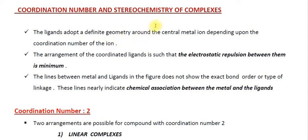Let us discuss the stereochemistry of coordination complexes, also called the coordination number and the stereochemistry of complexes. We already know what a coordination complex and coordination number is. The coordination number is the number of ligands attached to the central metal ion. Depending upon the coordination number, the ligands adopt a definite geometry around the central metal ion.